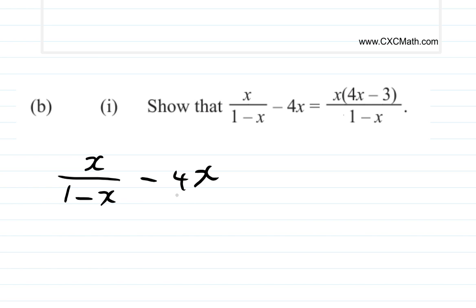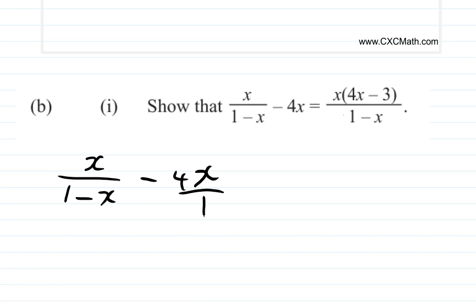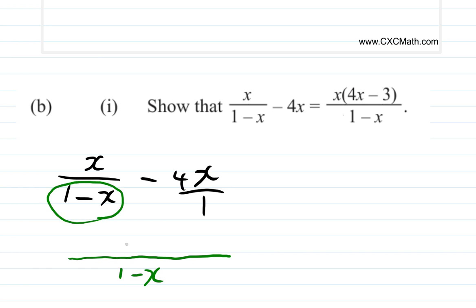Alright, did you finish? Let's see. x over (1 minus x) minus 4x. This is a fraction, so let's make 4x a fraction also — put it over 1. If you use the LCM method now, you draw the line and find the LCM of (1 minus x) and 1. What is the LCM? It's going to be (1 minus x). (1 minus x) into (1 minus x) goes 1 time. 1 times x will give you x, so x will come here. Remember how to deal with your fractions.